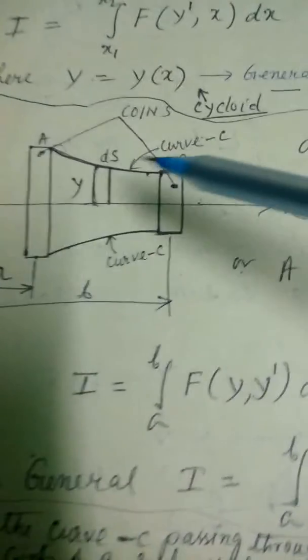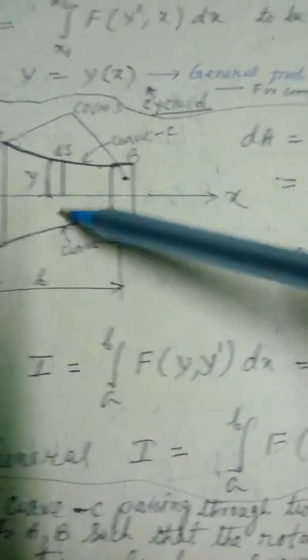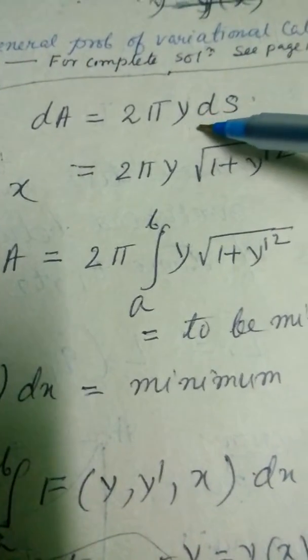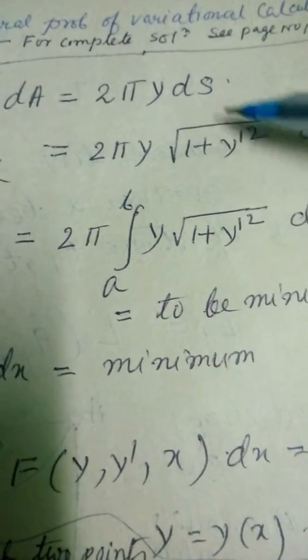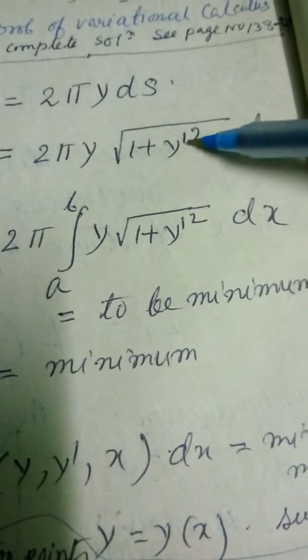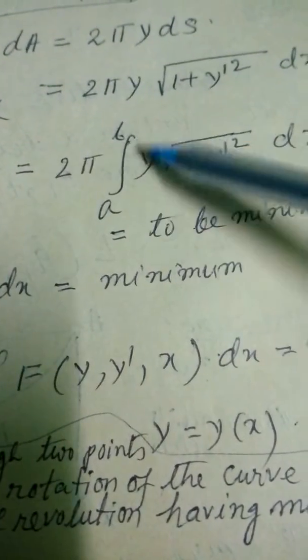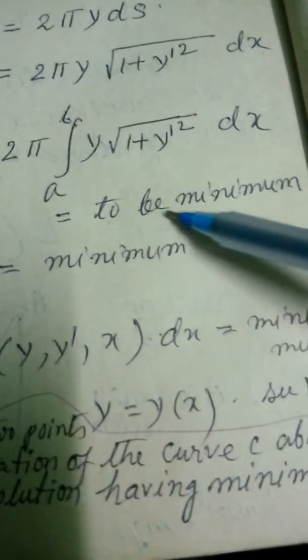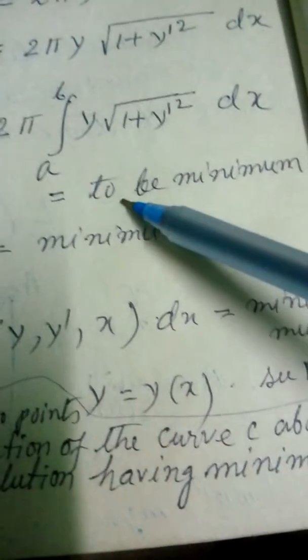Now, what is the area? If we take a point, this is y and this is ds. So what will be the circular ring? So this area is equal to 2πy·ds. A will be equal to 2π times the integral from a to b of y√(1+y'²)dx. And that is to be minimum area, surface area to be minimum.